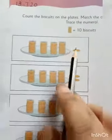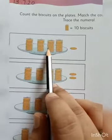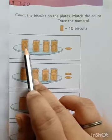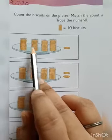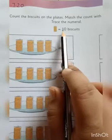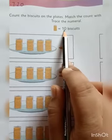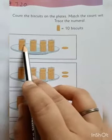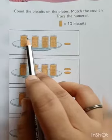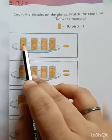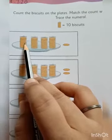Now, can you see here what is given? Here it's given a packet of biscuits. There are many packets, and here it is written in one packet there are 10 biscuits. How many biscuits are there in one packet? 10 biscuits. We have already learned how to count by skip counting.